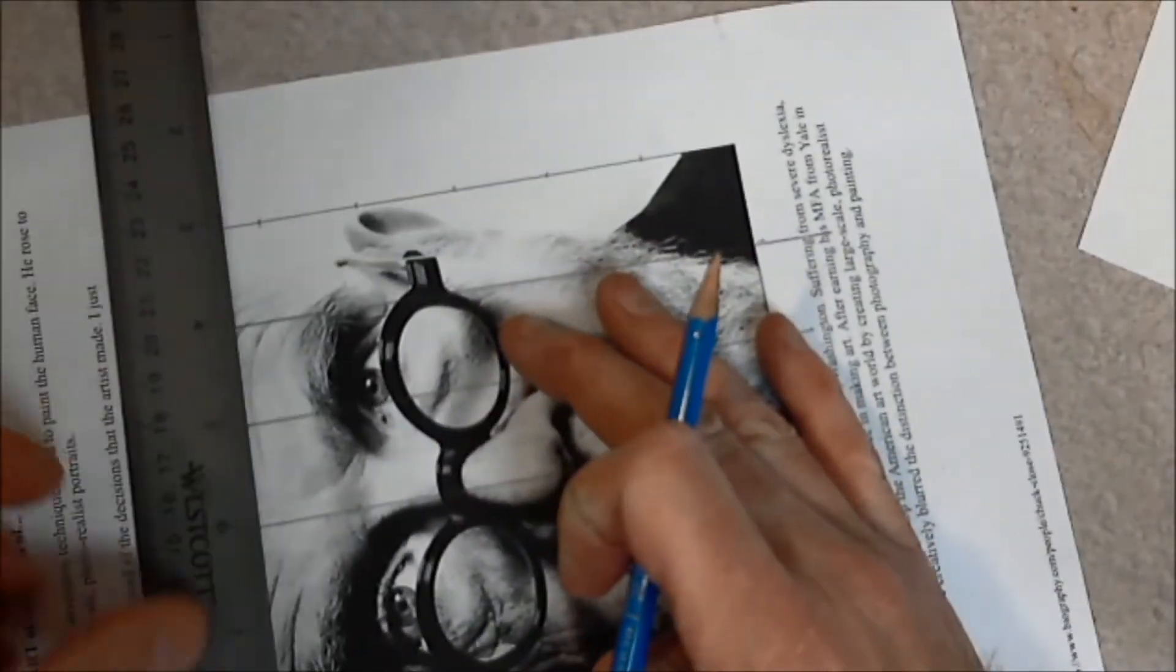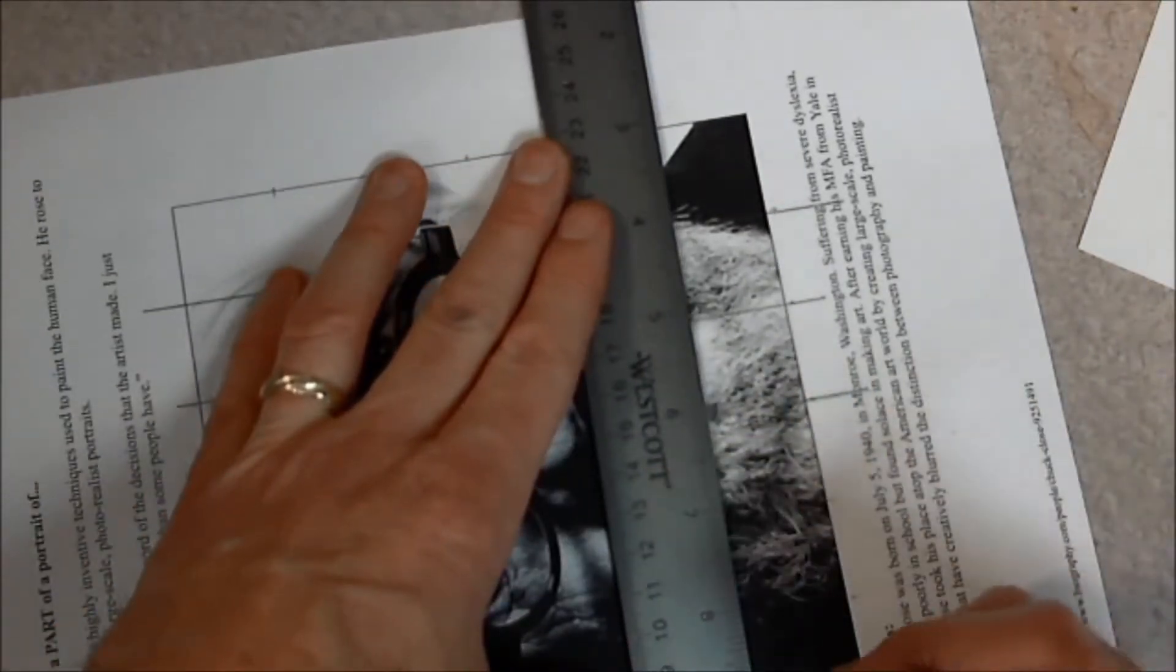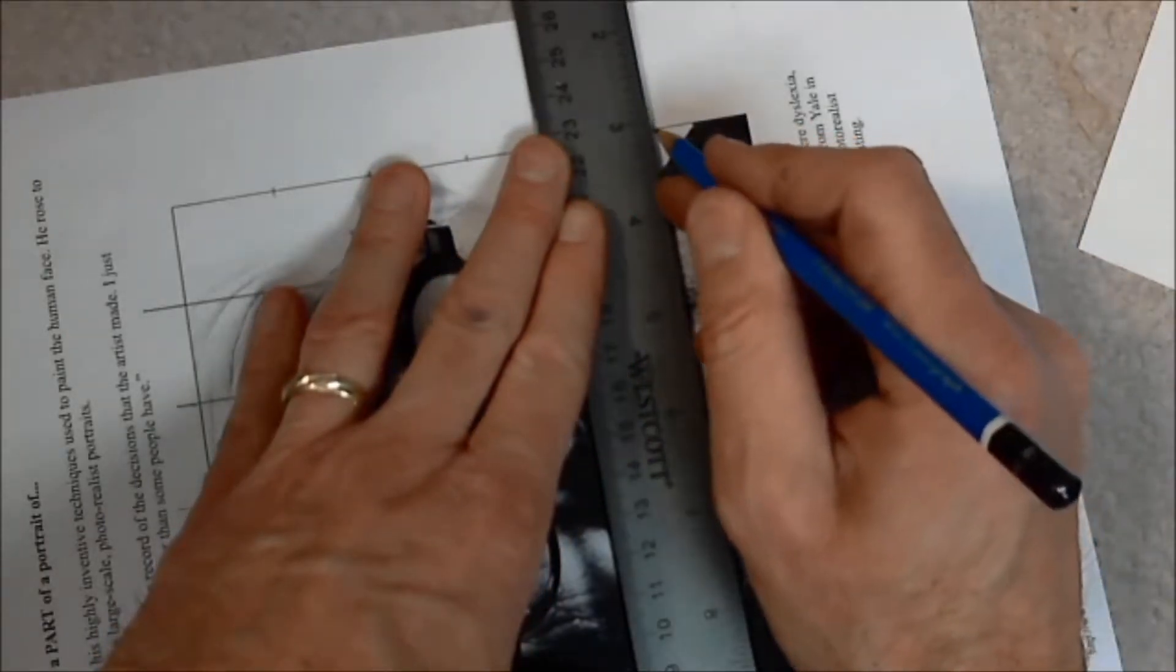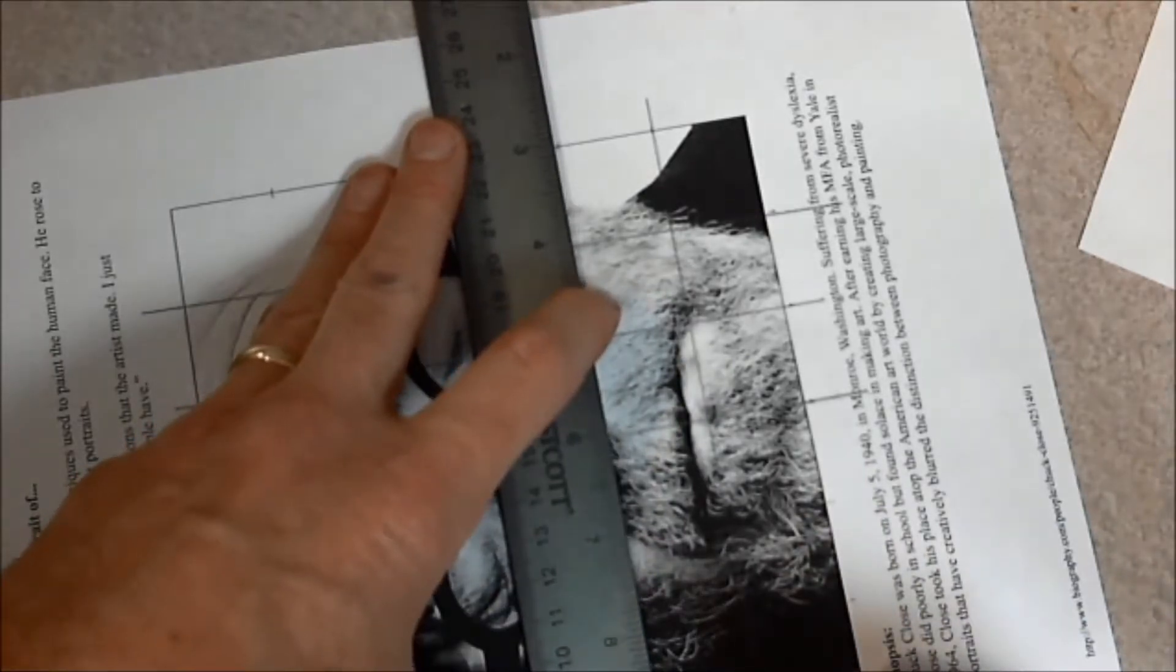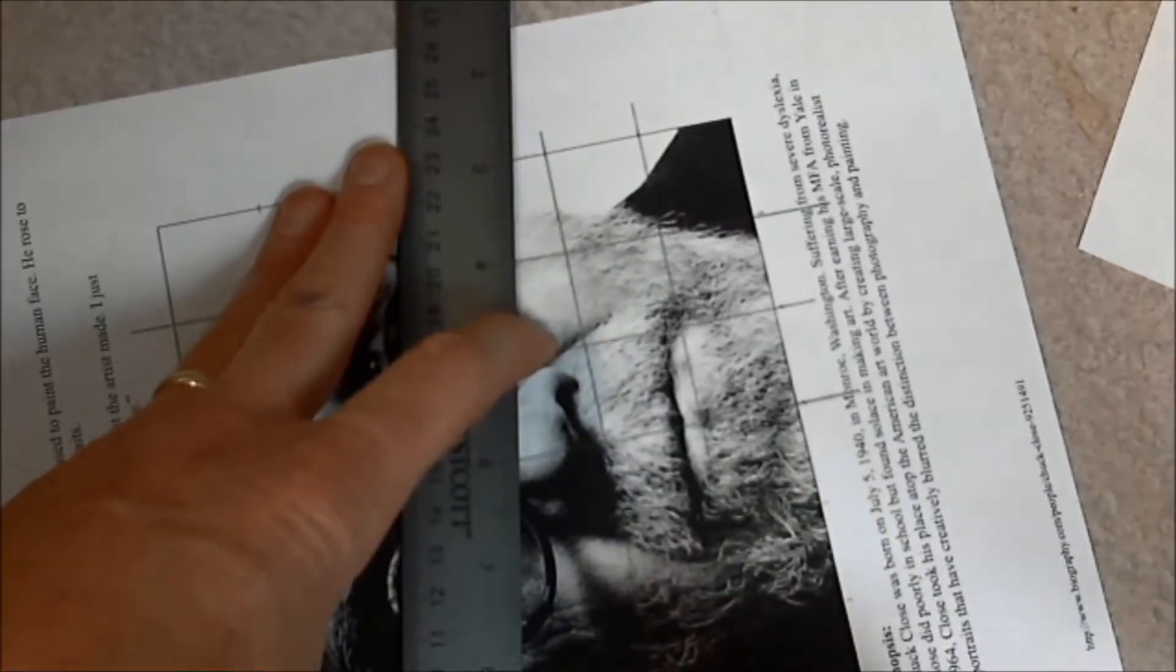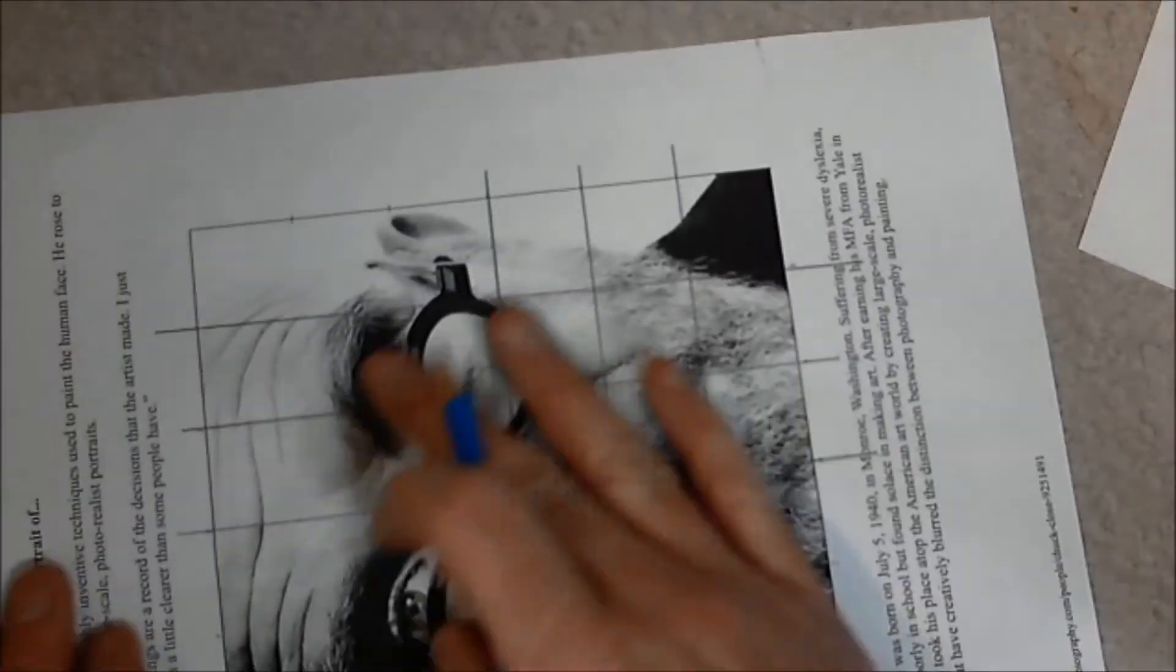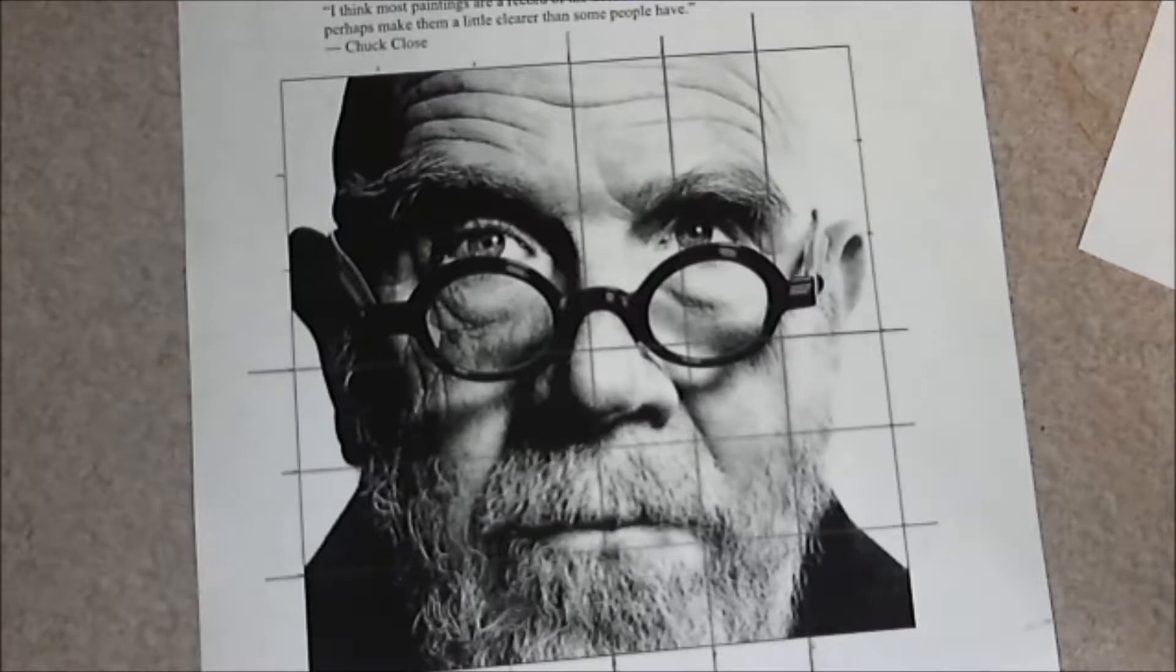And then I'll do the same thing and I'll turn my paper and I will mark it off. Hold my pencil here, one, two, three, and I'm going to continue doing that until it is all drawn out into a grid.